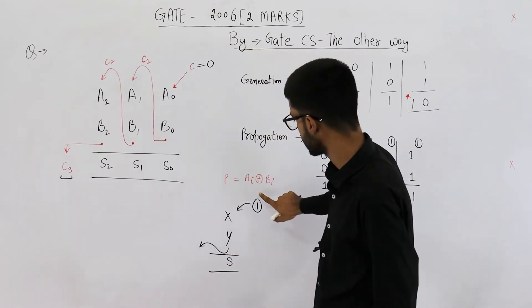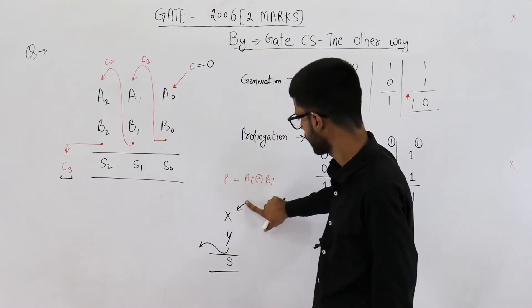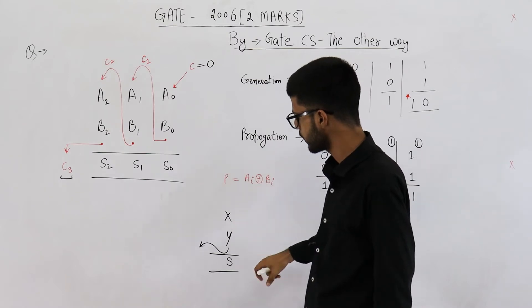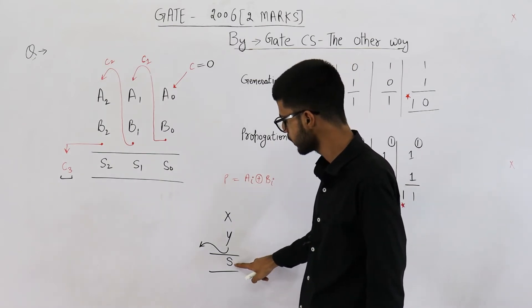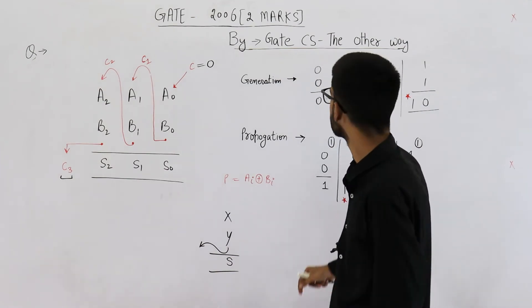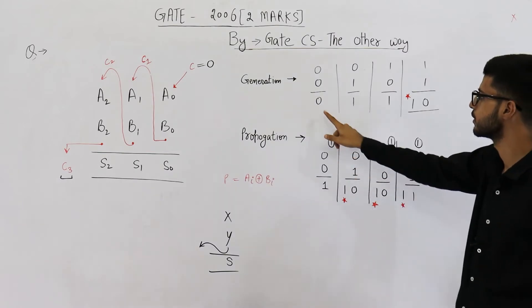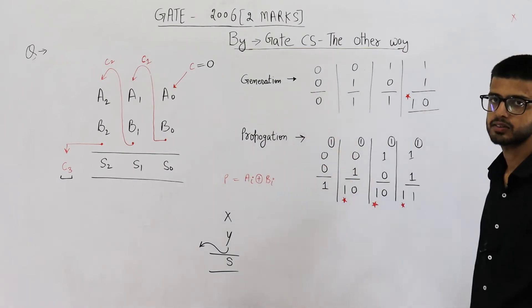Now let us see what is carry generate and what is carry propagate. A stage, say you are adding x and y. These two binary bits are added. x and y are added. Under what conditions will a carry be generated? Let us see. If these numbers are 0, 0, you can see no carry is generated. The sum is 0 and the carry is also 0.